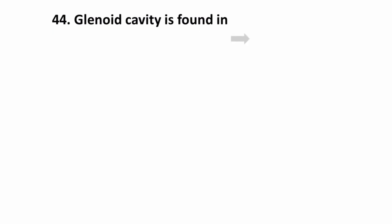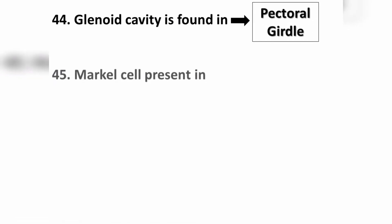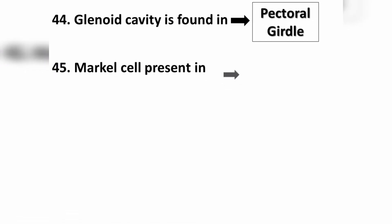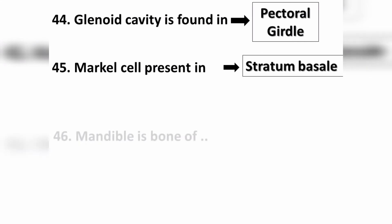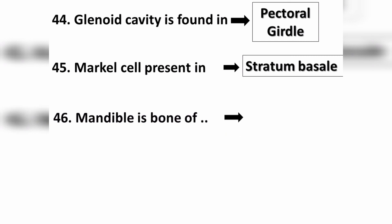Question number forty-four: the glenoid cavity is found in the pectoral girdle. Question number forty-five: Merkel cells are present in the epidermis, in the deepest layer called the stratum basale. Question number forty-six: the mandible is the bone of the lower jaw.